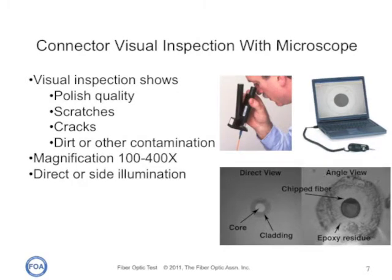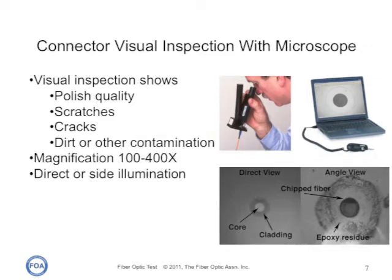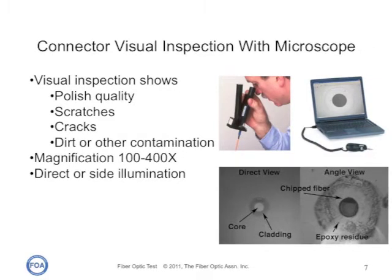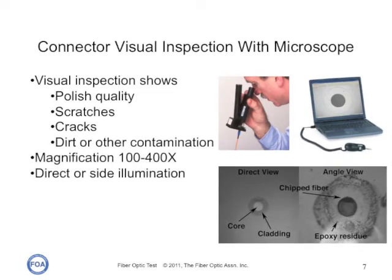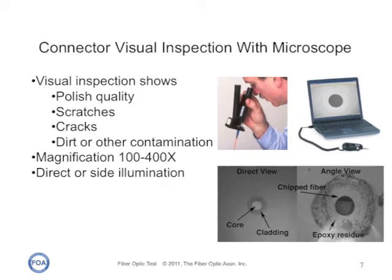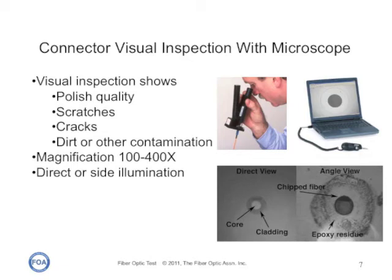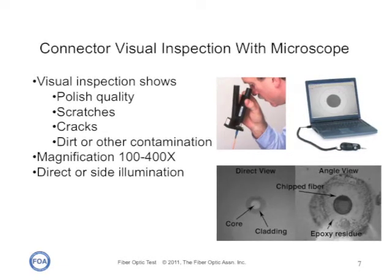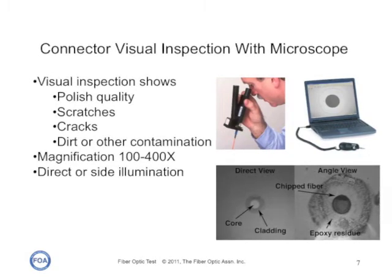We also do visual inspection with a microscope. We look at the end of connector ferrules. When we're doing terminations, we use it to determine the quality of the polish on the connector end, or find scratches or cracks in the fiber, so that we might end up rejecting a connector. On any connector, we use it for looking for dirt or other contamination on the end of the ferrule. Typically, we use magnifications of about 100 to 400 times, and we use both direct and side illumination, which can show us different things about the end of the ferrule of the connector.